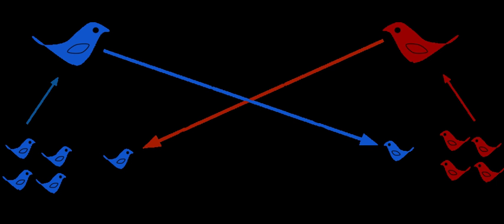The specialized pollination limited gene flow between the two species, eventually resulting in two different species.